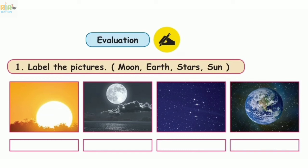We will see the evaluation part. Section 1: Label the pictures — moon, earth, star, sun. The pictures are given and the names are mentioned. The first picture is sun, second is moon, third is stars, and the last is earth.